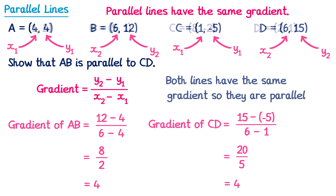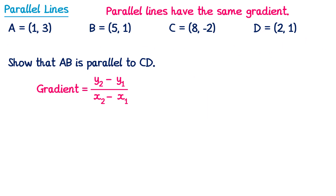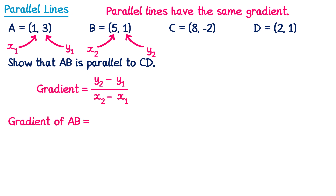Now let's try a second example of this type of question — the same structure but with different coordinates. For line AB, labelling x1, y1, x2, y2, the gradient of AB equals y2 minus y1 over x2 minus x1, which is 1 minus 3 over 5 minus 1. That gives negative 2 over 4, which simplifies to negative one half.